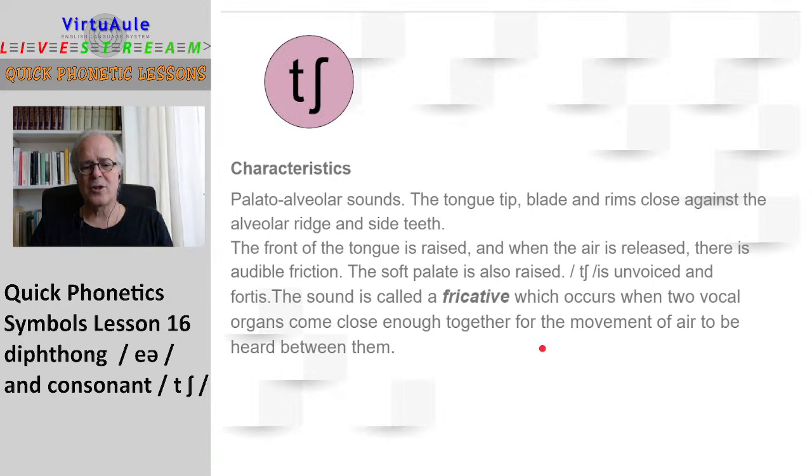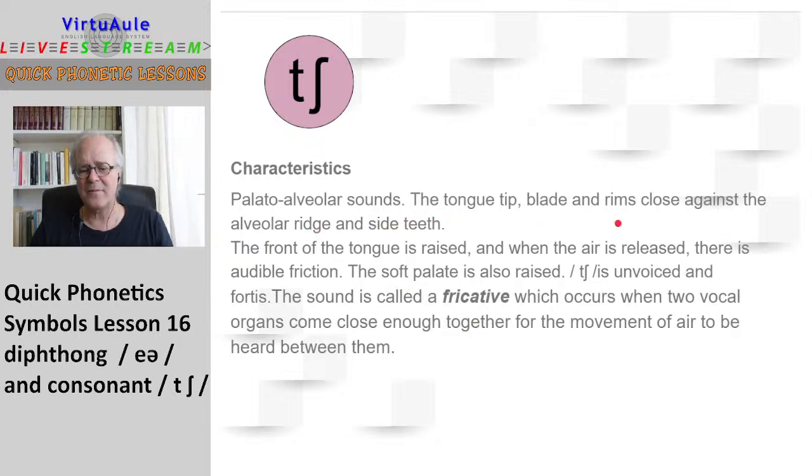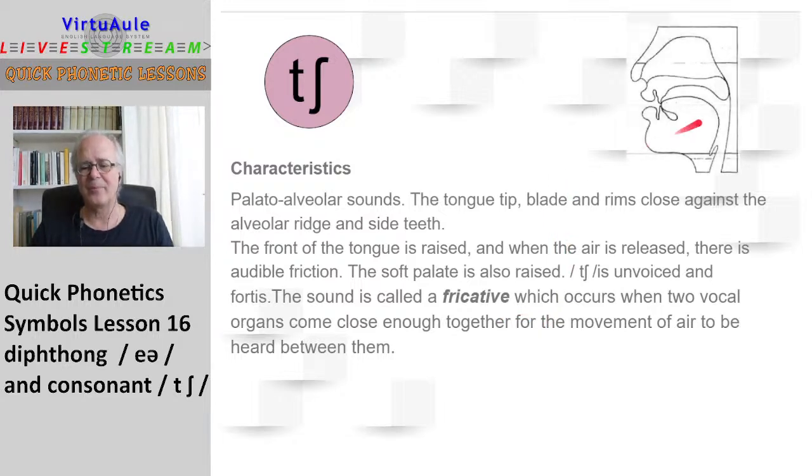A little bit closer, the CH sound is palato-alveolar sound. The tongue tip, the blade, and the rims of the tongue close against the alveolar ridge and the side teeth. The front of the tongue is raised, and when the air is released, there is audible friction. The soft palate is raised. CH is unvoiced and fortis. The sound is called a fricative, which occurs when two vocal organs come close enough together for the movement of air to be heard between them.